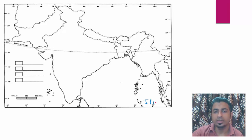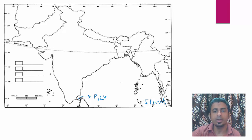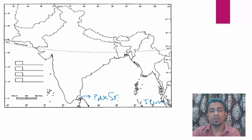Next is Palk Strait. A strait is a thin water body or channel which connects two water bodies. Palk Strait is here between Sri Lanka and India. Which two water bodies does it connect? It connects the Bay of Bengal and the Indian Ocean. So this is Palk Strait.